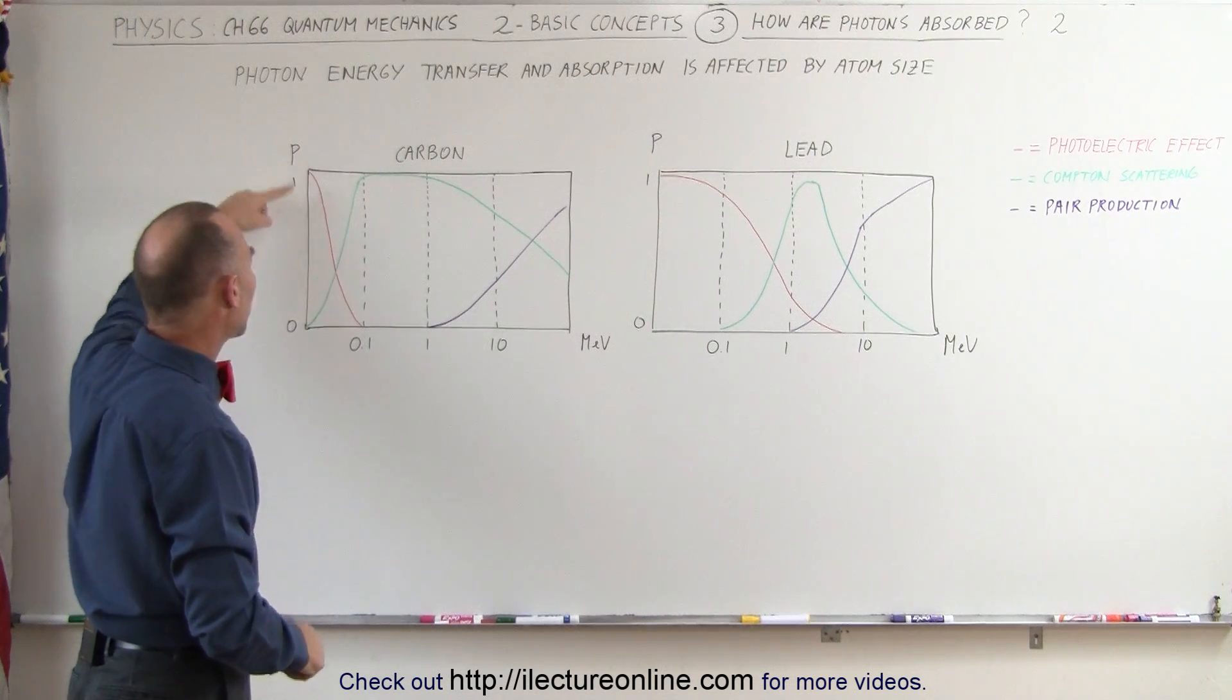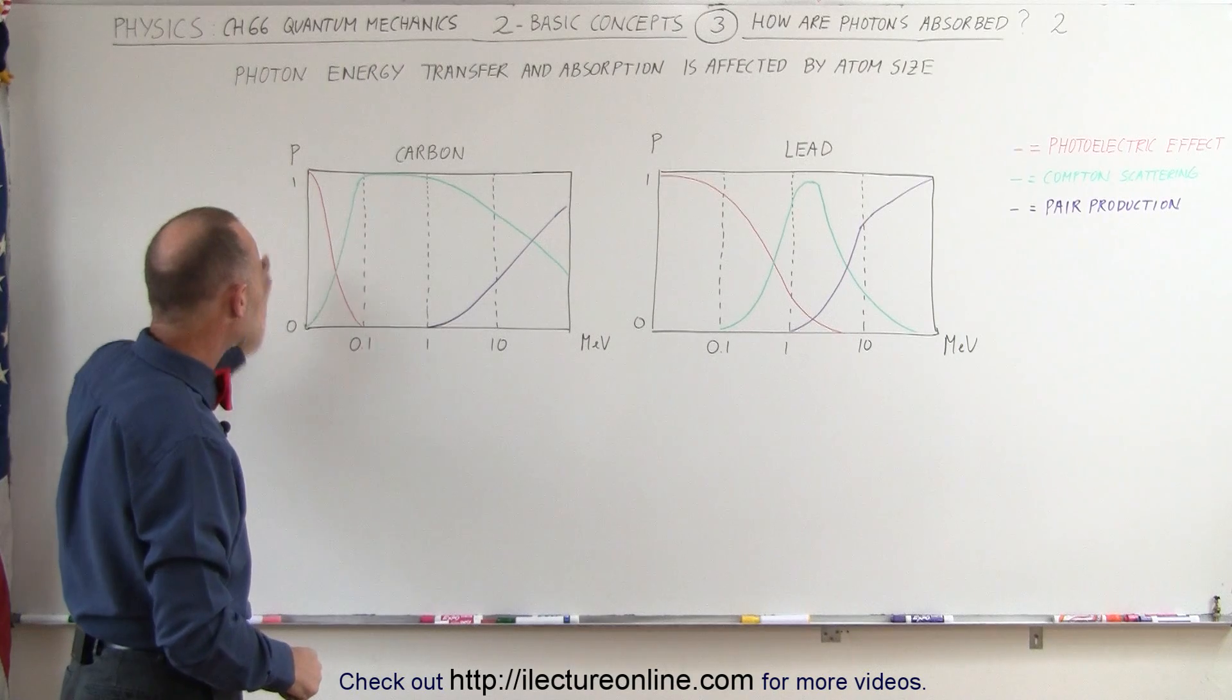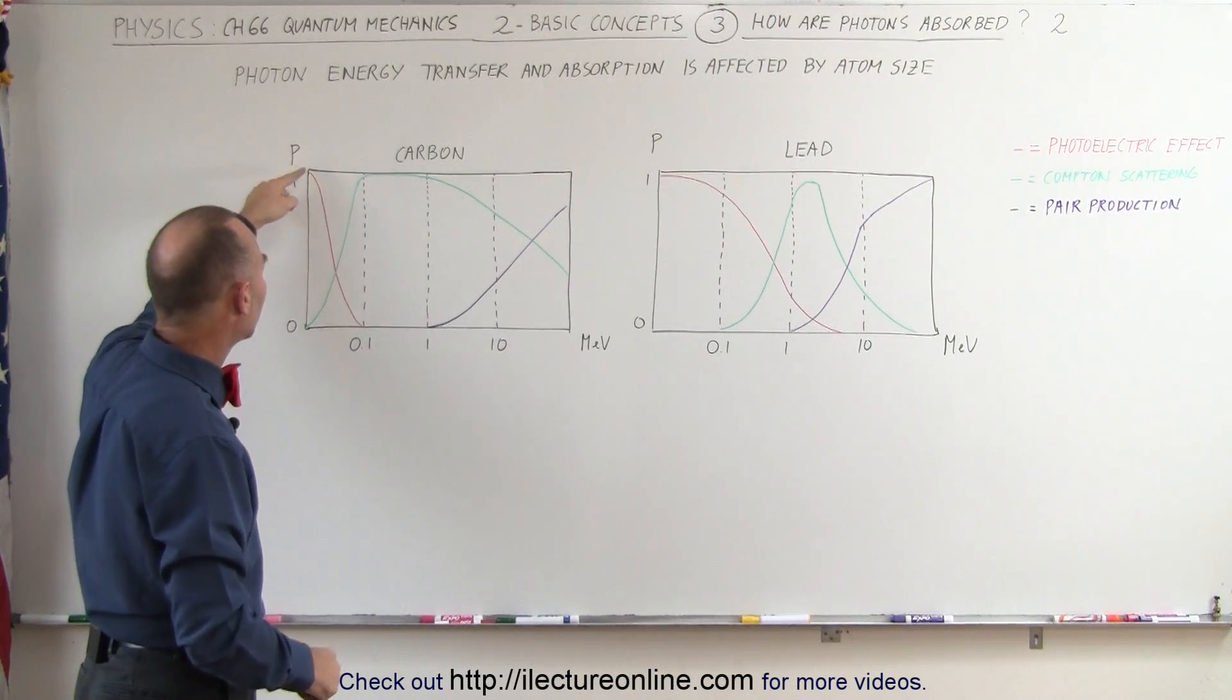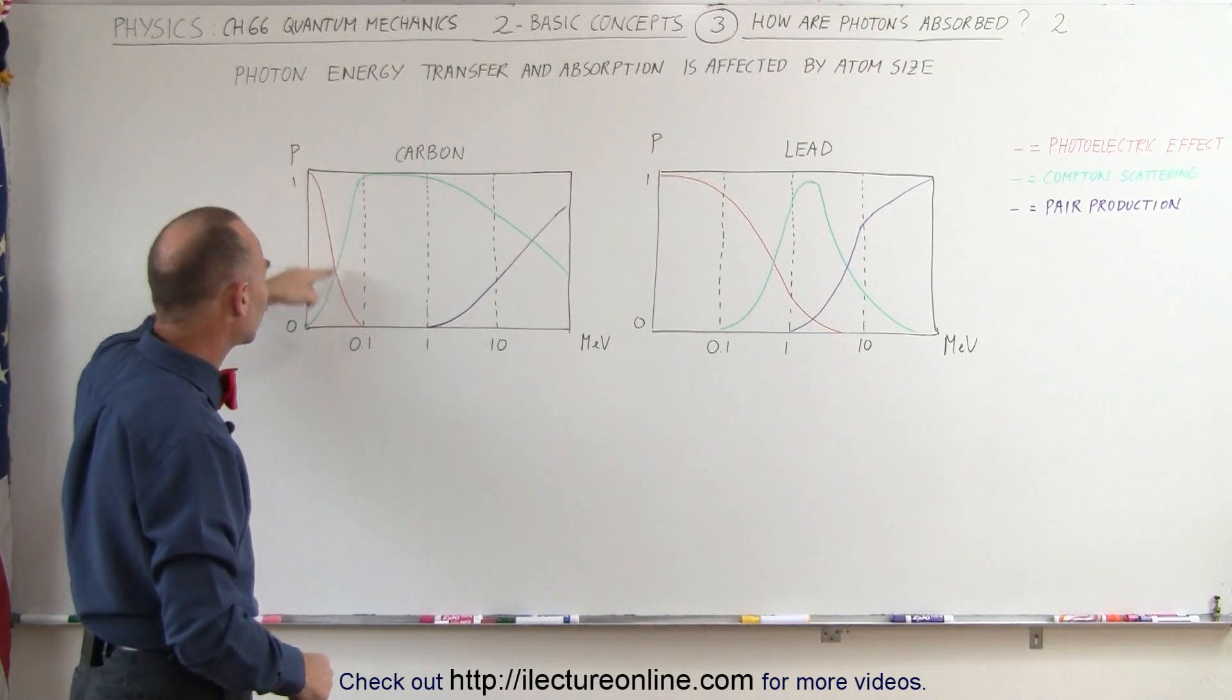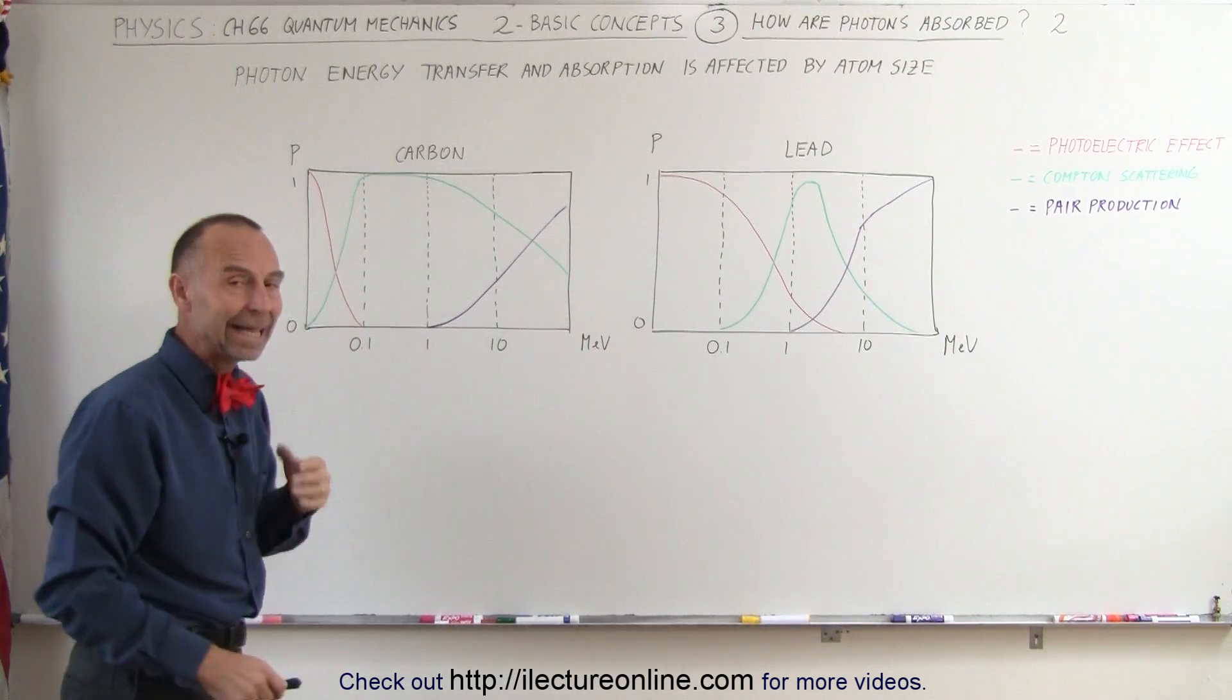On the vertical axis we have what we call probability, the probability of that event occurring. Notice that as the energy of the photon increases, the probability of having a photoelectric effect decreases while the probability of having a Compton scattering effect increases.